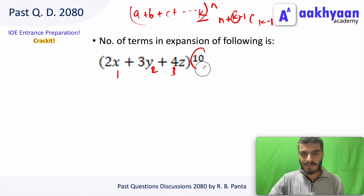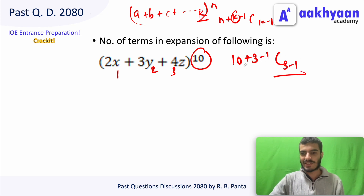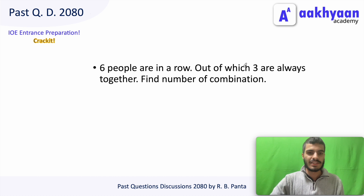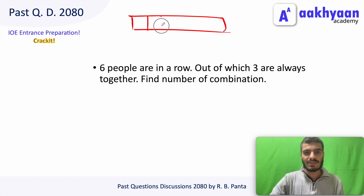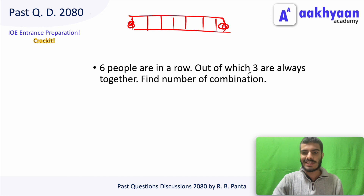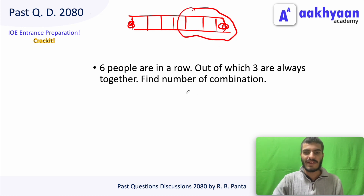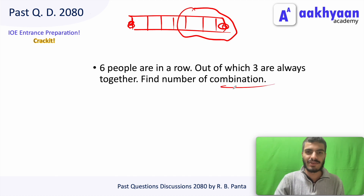For n = 10 and k = 3, the number of terms is (10 + 3 - 1) C (3 - 1) = 12 C 2. For the arrangement problem: 6 people out of which 3 are always together — treating those 3 as one unit gives the number of combinations.